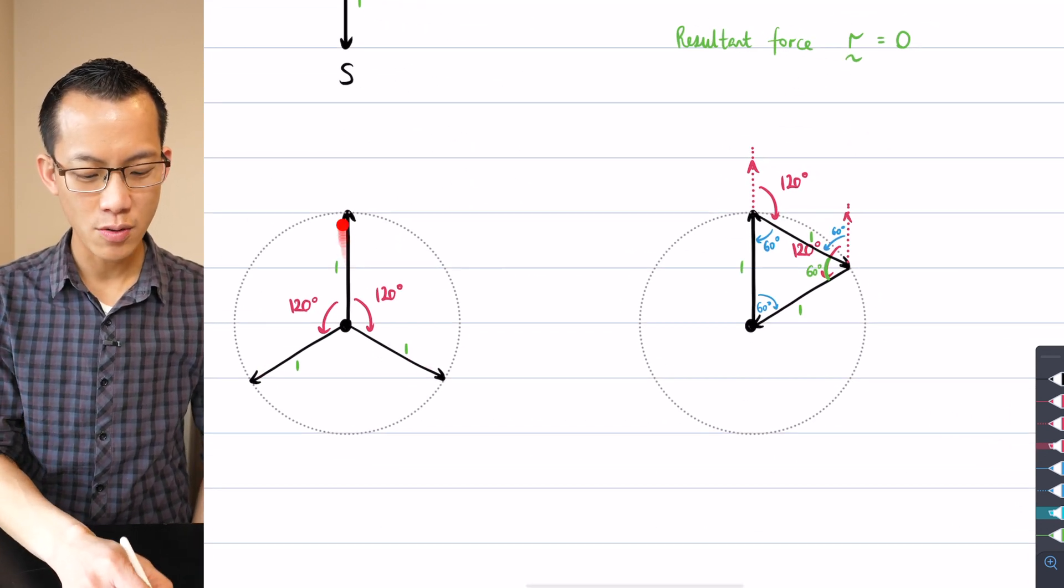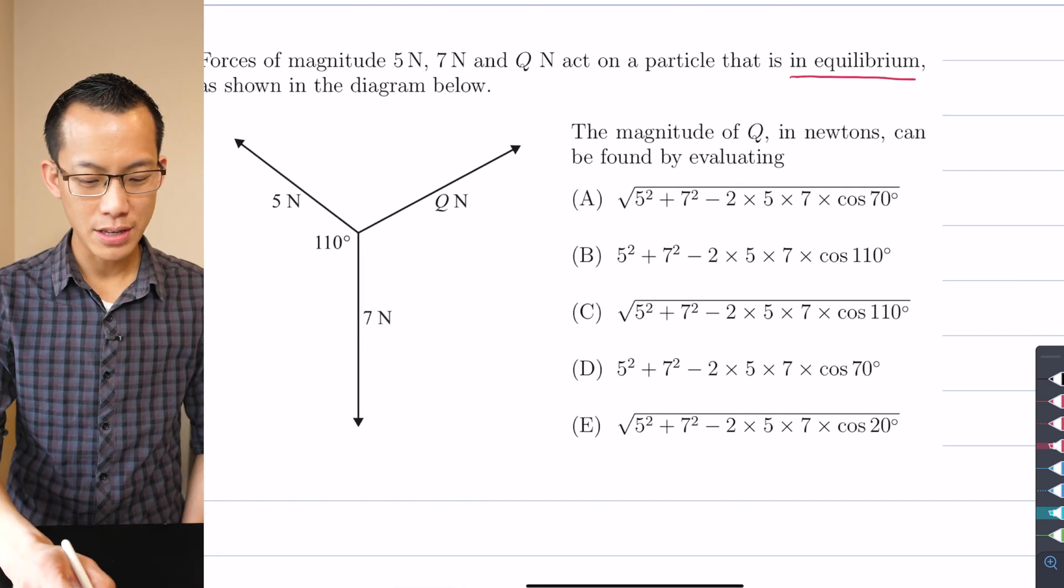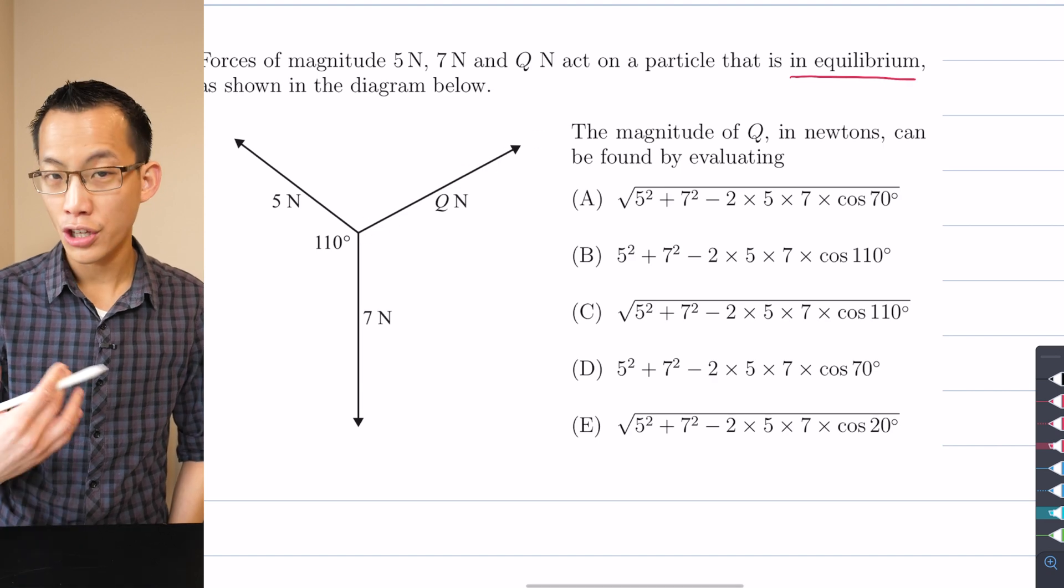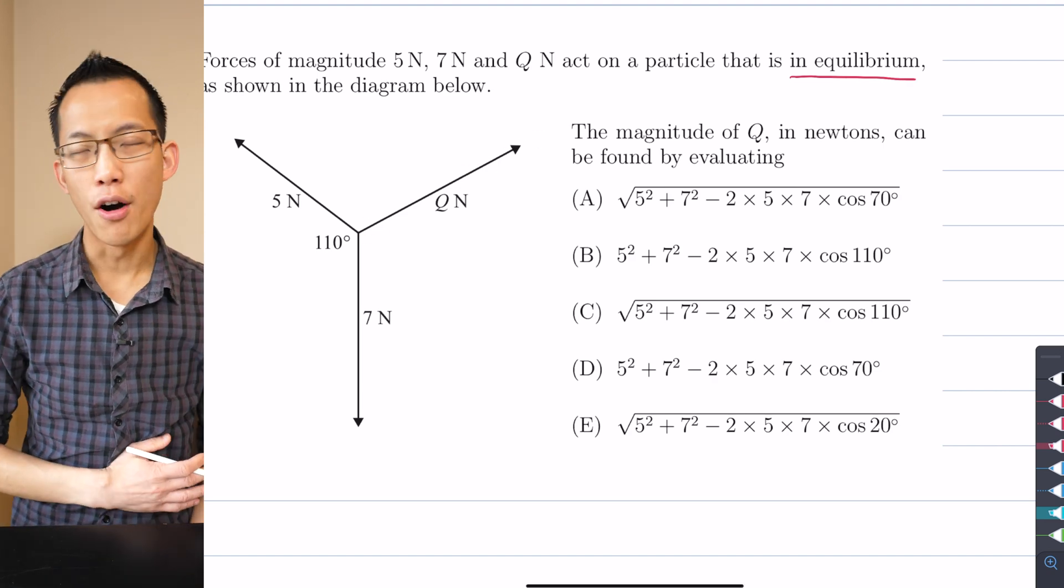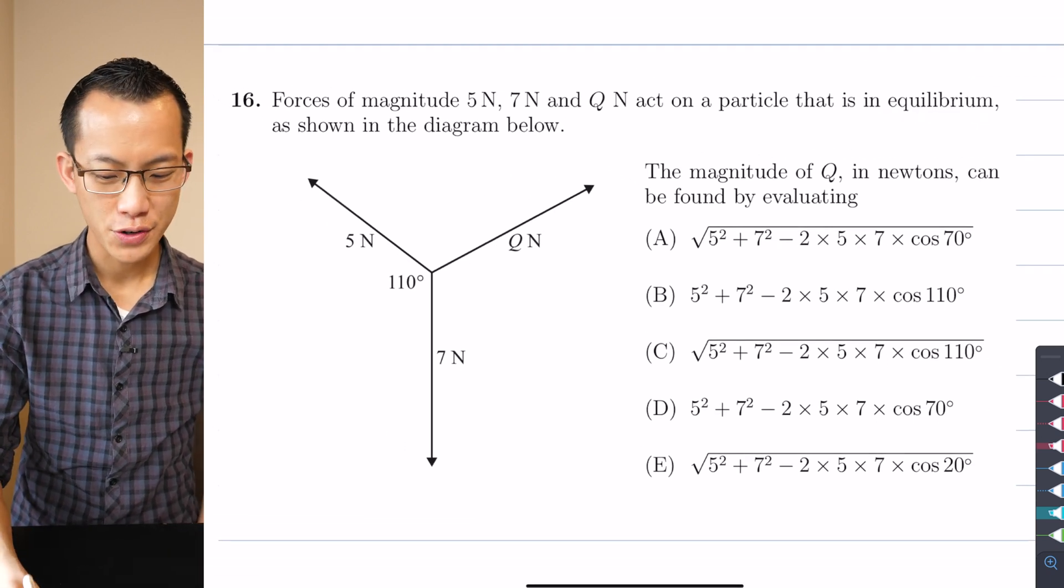You can see these three vectors here once I put them together I form a triangle. In that triangle what I want to do is find this unknown side Q and that'll give me the magnitude of that resultant force. How do I create the appropriate triangle?